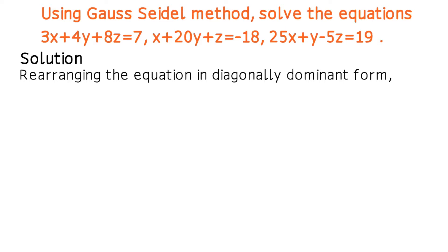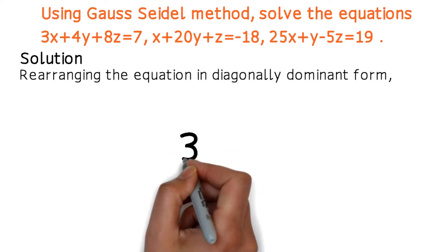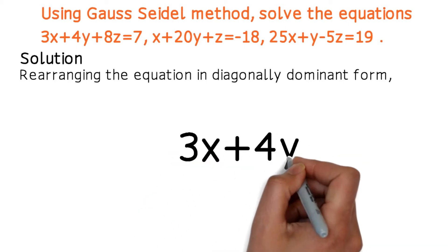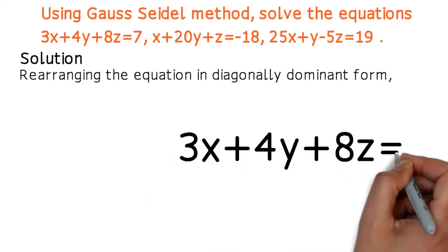For the first equation, the x coefficient must be dominant. We check that the modulus of the x coefficient is greater than or equal to the sum of the moduli of the y and z coefficients. The first equation is 3x plus 4y plus 8z equals 7.